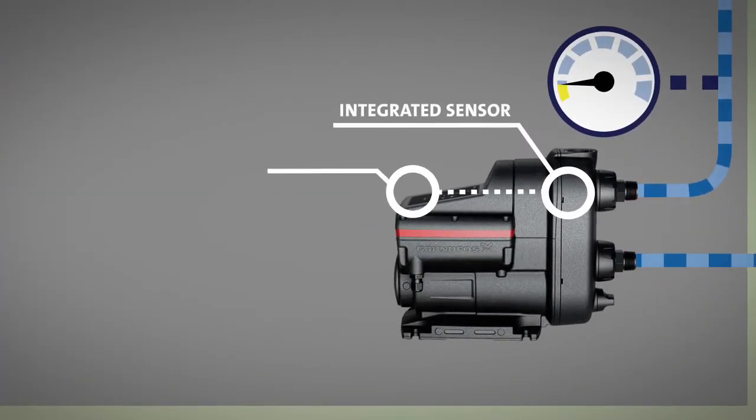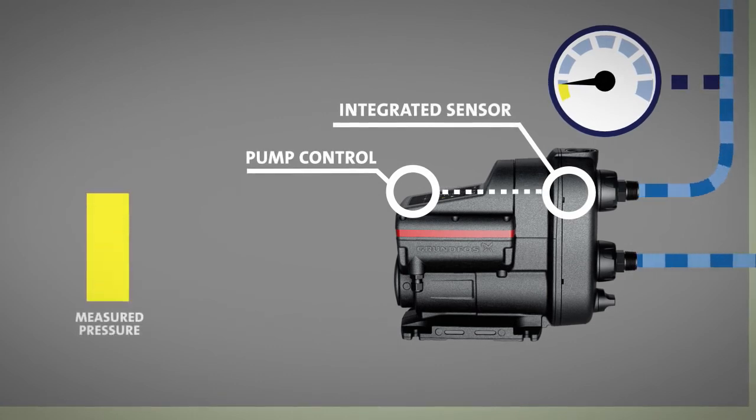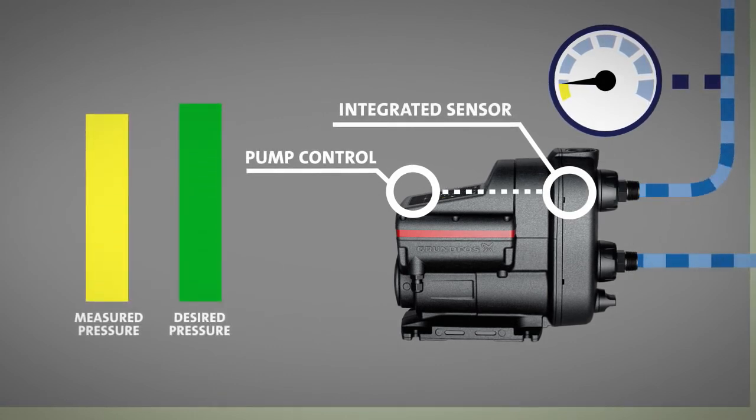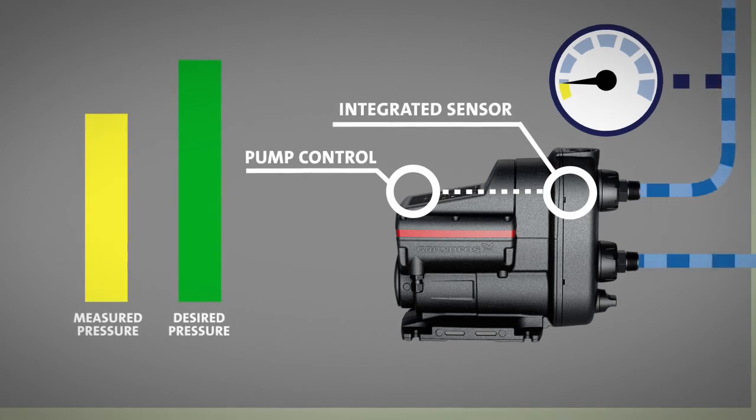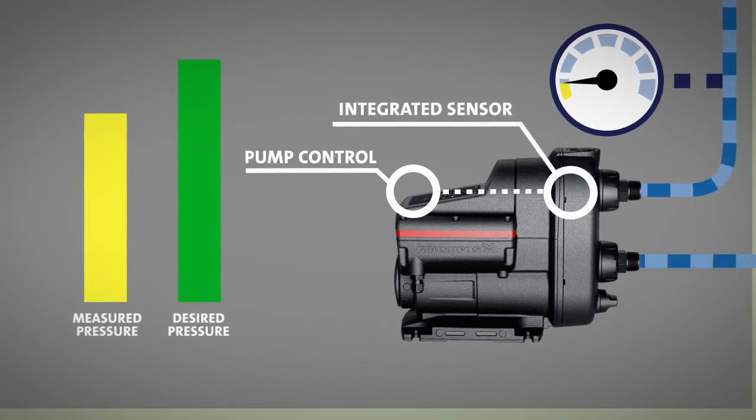The sensor sends a signal to the pump control, which then compares the measured water pressure level with the desired water pressure, that is, the pressure that has been set based on the homeowner's needs.